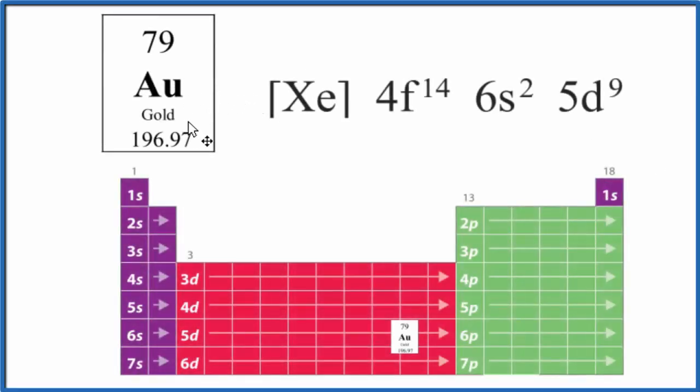In this video, we'll write the electron configuration for Au. This is gold, and the electron configuration for gold is a bit of an exception, so we need to be careful with that.